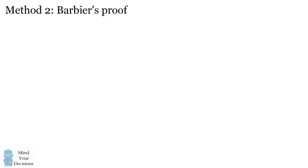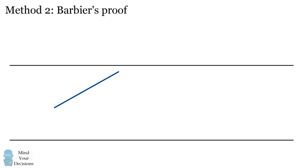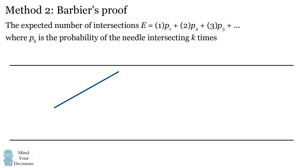Now I'm going to present the second proof, which is Barbier's proof of Buffon's needle. We start with our diagram and needle of length one. For any needle, the expected number of intersections is 1 times the probability of having one intersection, plus 2 times the probability of having two intersections, plus 3 times the probability of having three intersections, and so on. This is the definition of the expected value of a discrete random variable, where p of k is the probability a needle intersects k times.